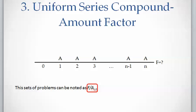These sets of problems can be displayed with the factor F/A, or F over A. Again, the left side of the slash sign is the unknown parameter F, and the right side is the given variable, which is A.